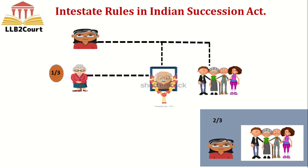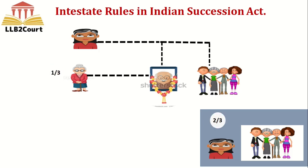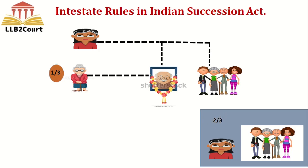The widow will get 1/3 and the remaining kindreds — that is, mother, father, brothers, and sisters — will share the rest. If brothers and sisters are not there, their children can also take their share in their position. This is the doctrine of representation, the same as in the Hindu Succession Act, and it is applicable here as well.